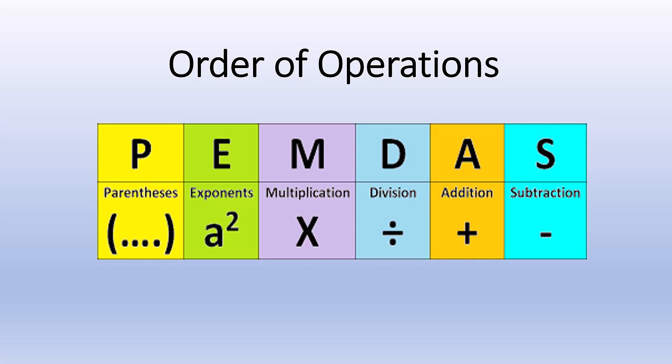Whenever you have a problem that has different operations, you need to follow these particular rules. The parentheses get solved first. Then if you have exponents, then you would do those.